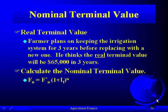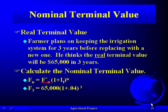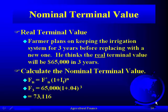So how do we do that? We take the real value and compound it at the inflation rate for the end periods. In this case, we assume the real value is $65,000. We compound it at four percent for three periods. He expects then that he can actually sell the center pivot irrigation system in three years for $73,116 in nominal countable dollars.